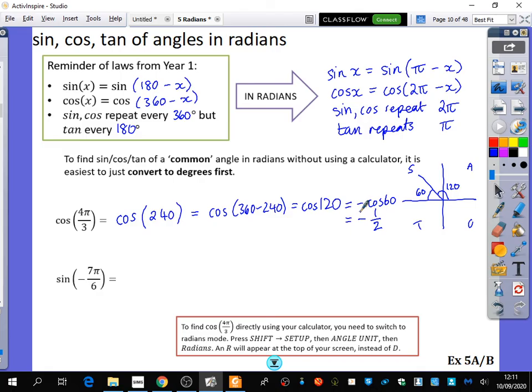So to do that, can I just look over your shoulder? You go to shift, menu, 2 for angle unit, and then 2 for radians.